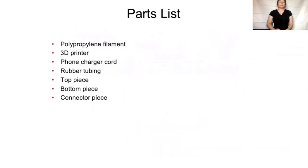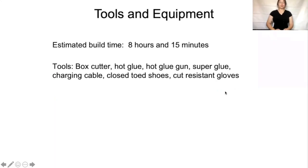In order to properly execute my prototype, you need polypropylene filament, a 3D printer, a phone charger cord, rubber tubing, a top piece, bottom piece, and connector piece, which are all included in my CAD files. My estimated build time for my prototype is 8 hours and 15 minutes, which also includes 3D printing time.